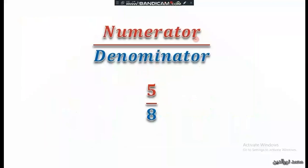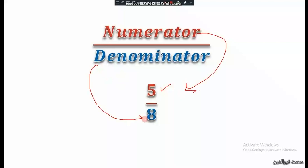In a fraction, the number written on top is called the numerator, and the number written below is called the denominator. For simplification, we use the notation N for numerator and D for denominator.